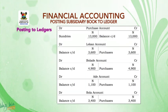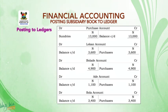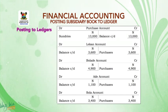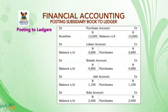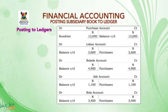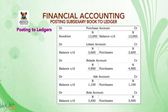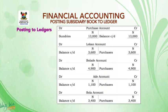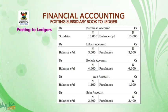Posted to ledger: on the debit side of the purchase account we have sundries of 13,000; on the credit side, balance carried down 13,000. Lecon account: credited with purchases 3,600, balance carried down on the debit side 3,600. Bolady account: credit side purchases 4,900, balance carry down 4,900. Adi's account: credit side purchases 1,100, debit side balance carry down 1,100. Shola account: credit side purchases 3,400, debit side balance carry down 3,400.